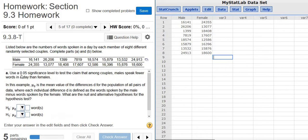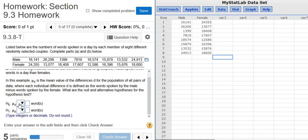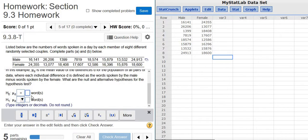And they're giving us the significance level, that's alpha, and we want to test the claim that among couples, males speak fewer words in a day than females. So we want to figure out what the null and alternate hypotheses are. So the null hypothesis is always equals, no matter what, and there's always a zero here, always, no matter what.